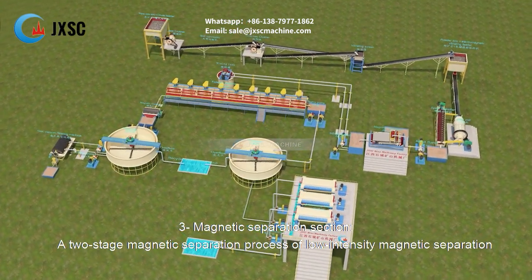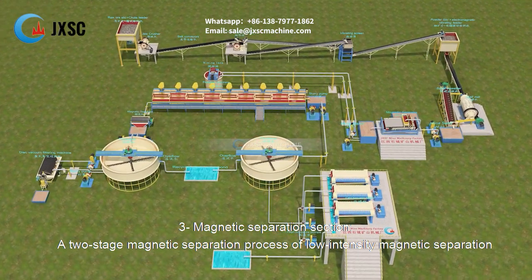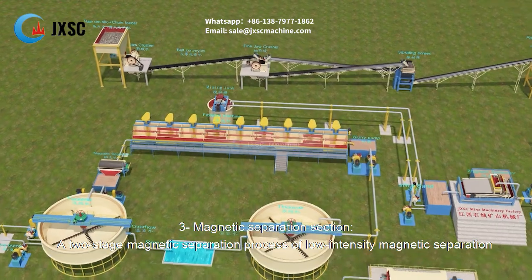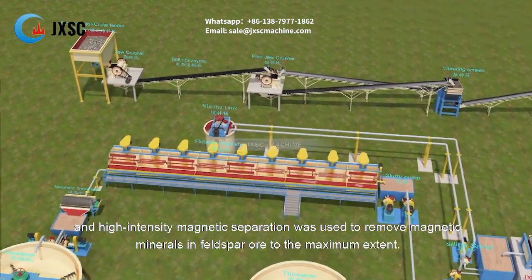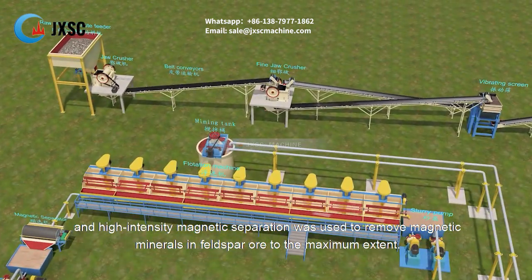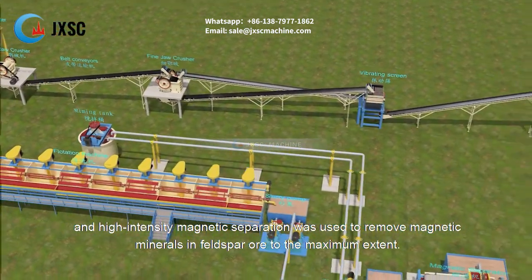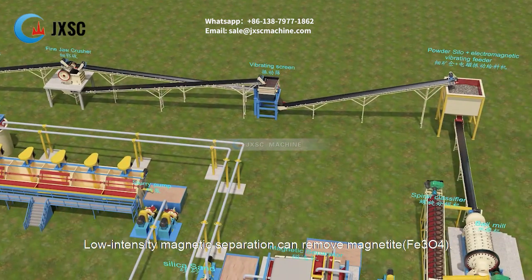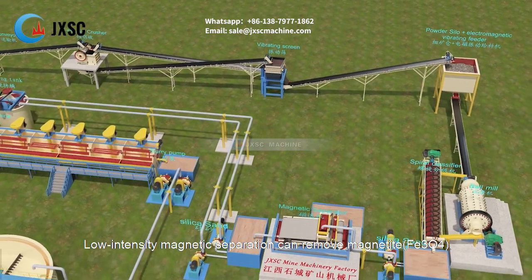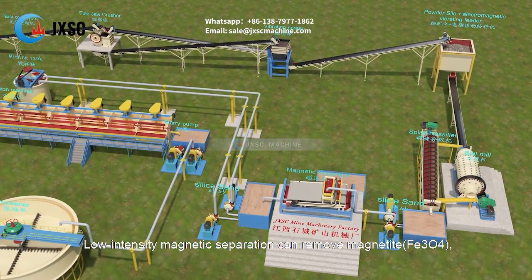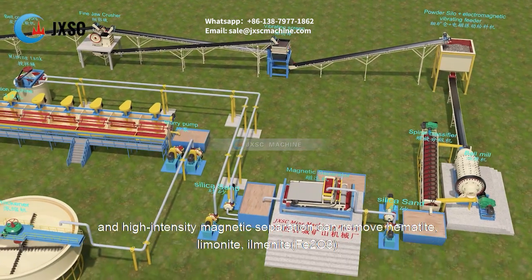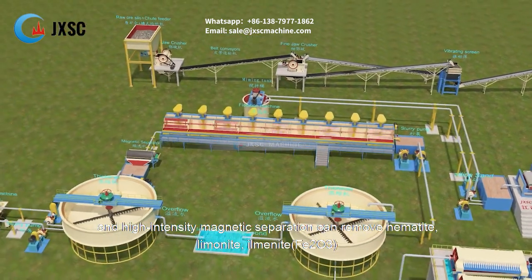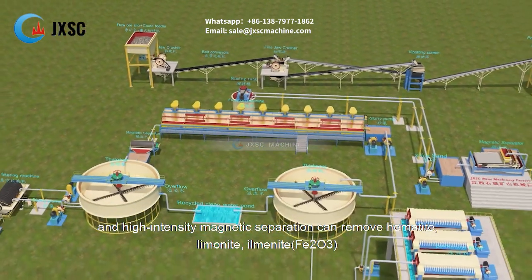3. Magnetic separation section: A two-stage magnetic separation process of low-intensity and high-intensity magnetic separation is used to remove magnetic minerals in feldspar ore to the maximum extent. Low-intensity magnetic separation removes magnetite (Fe₃O₄), and high-intensity magnetic separation removes hematite, limonite, and ilmenite (Fe₂O₃).